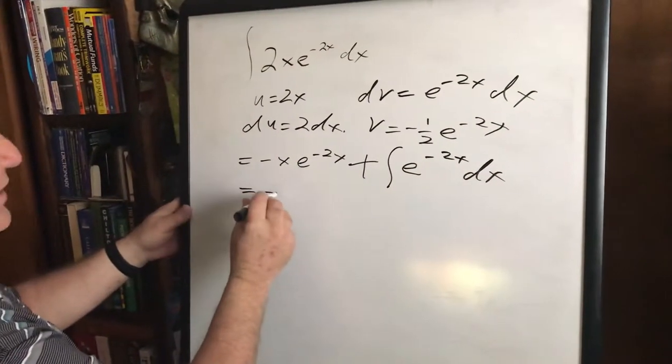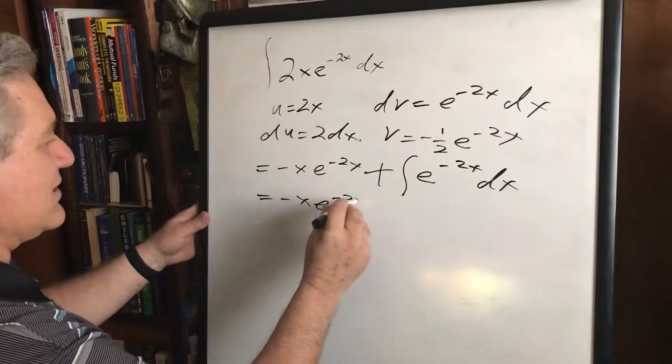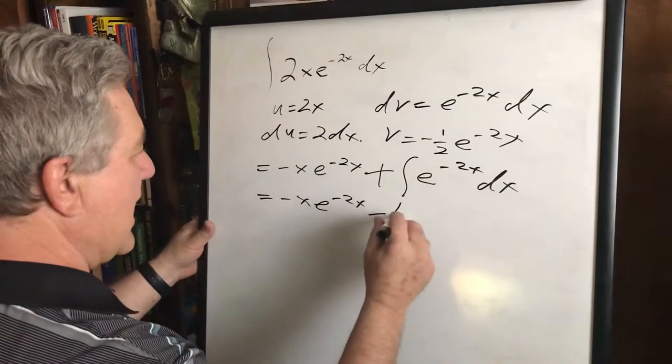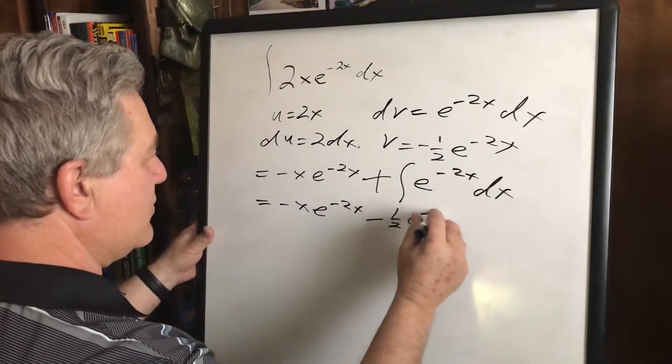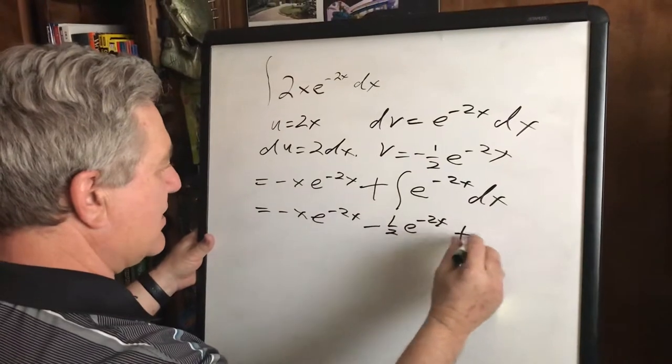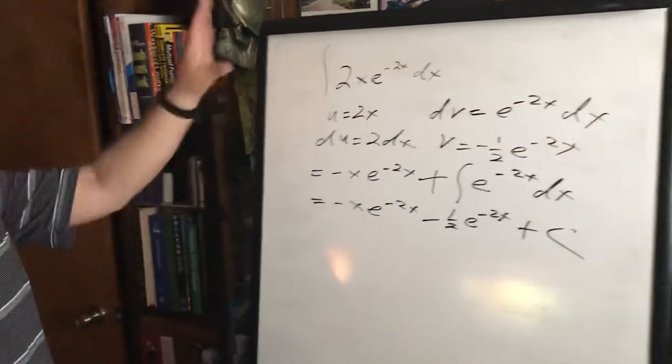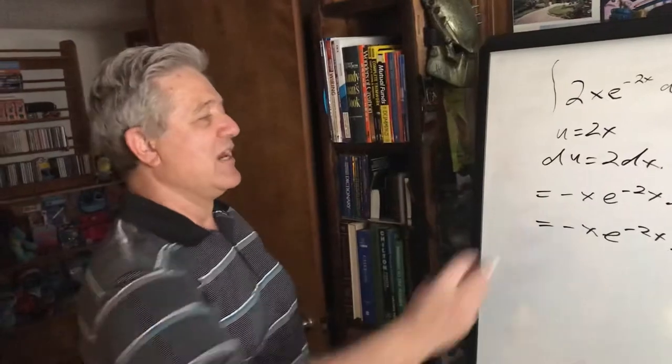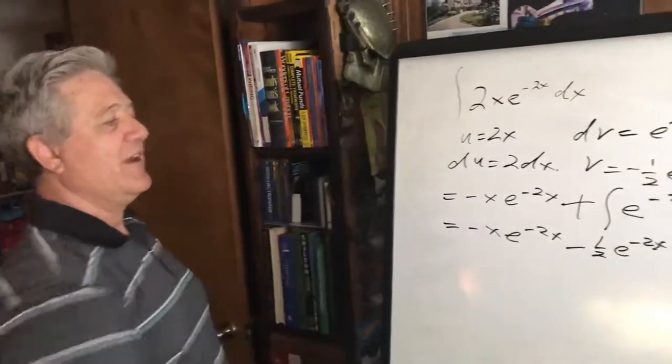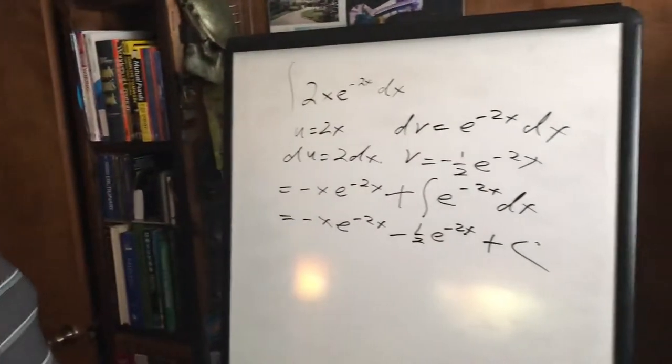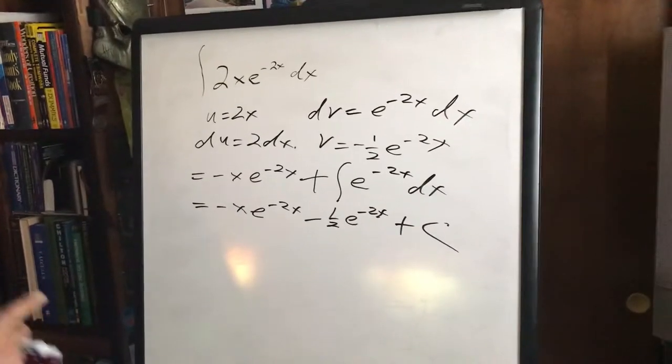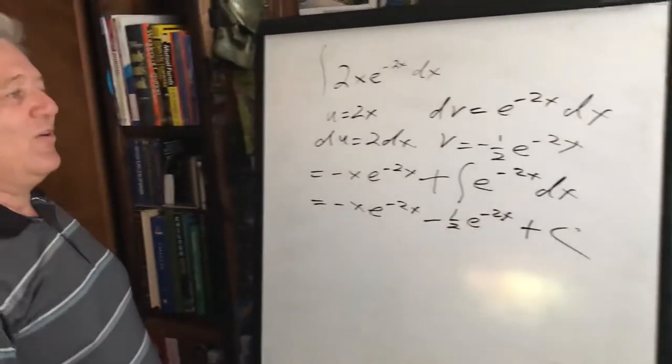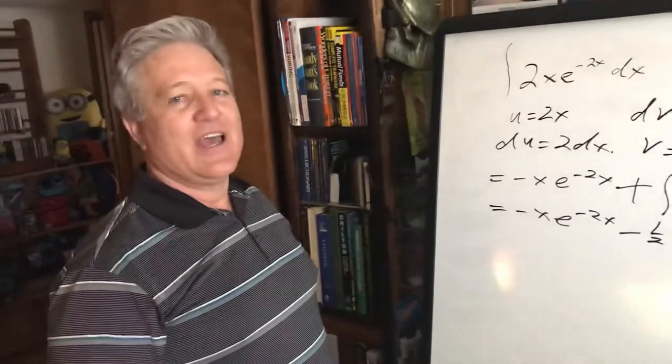That's equal to negative x e to negative 2x minus one half e to the negative 2x plus c. This is a lot easier because when you're so focused on getting the answer, my suggestion is include the constant in there, and this is where you're most likely to make less mistakes. Thanks for watching the video and have a good day.